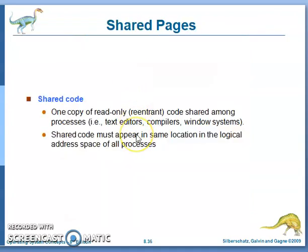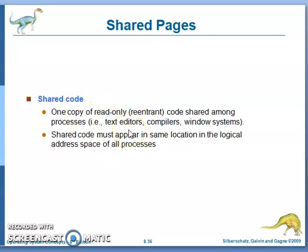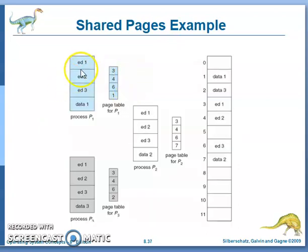Shared pages — one copy of read-only code can be shared among processes. For example, consider MS Word or any text editor. Suppose three users want to type or generate resumes — all three users require the text editor. The text editor is common for all, so you share it among all three users.